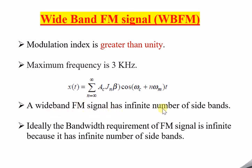A wideband FM signal has an infinite number of sidebands — that is why the summation goes from minus to plus infinity. Because it has a wide band, we can say it has an infinite number of sidebands. So ideally the bandwidth requirement of an FM signal is infinite, because there is no limit for bandwidth. Wide band means how much wide it can be — up to any extent. That is why we say the bandwidth requirement of wideband FM signal is going to be infinite, because it has infinite number of sidebands.